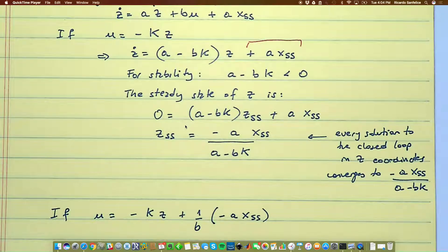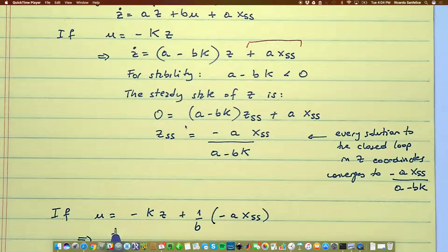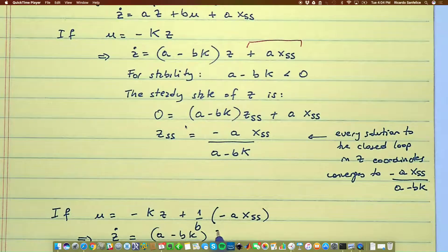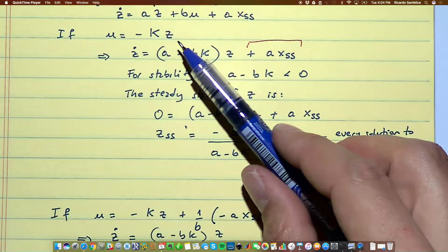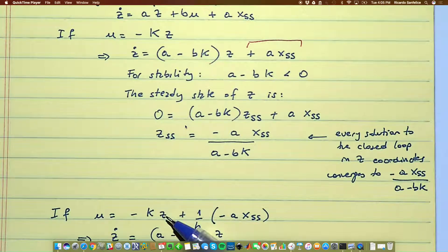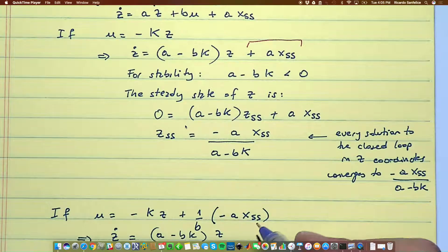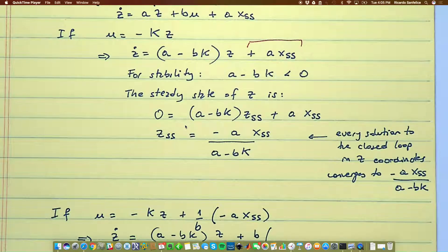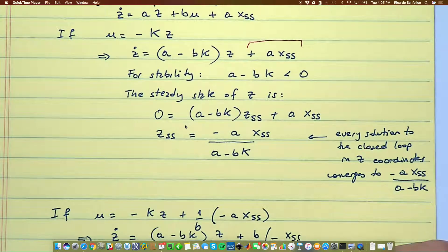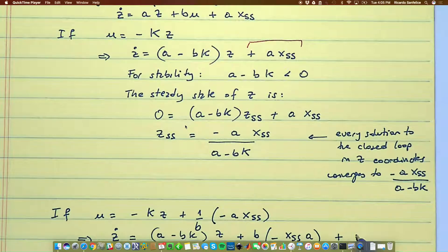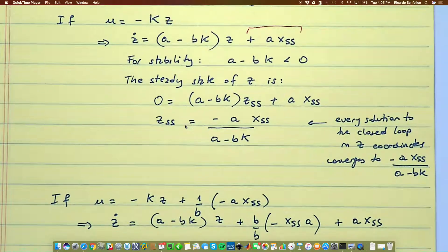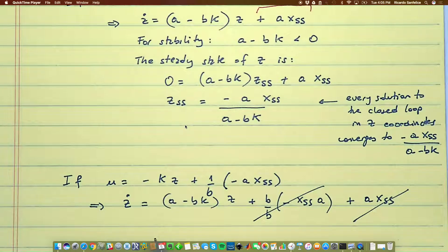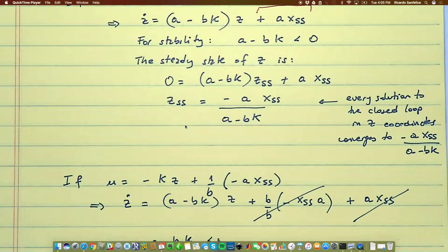Get rid of b, and now when b times u multiplies this term here, I get whatever I put here, and then put to that minus a x_ss. And then when, now I plug these things here, the closed loop will be a minus b k for z, so it comes from the plant a minus b k from here. And then the next term will be plus b times 1 over b, so that's going to cancel, minus x_ss times a, plus a times x_ss. So then these two will cancel.